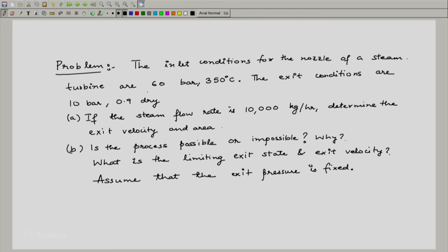The inlet conditions for the nozzle of a steam turbine are 60 bar, 350 degrees centigrade. The exit conditions are 10 bar, 0.9 dry. If the steam flow rate is 10,000 kilogram per hour, determine the exit velocity and area. And B, is the process possible or impossible? Why? What is the limiting exit state and exit velocity? Assume that the exit pressure is fixed.